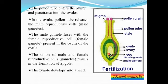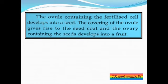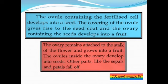The zygote develops into a seed and the ovary develops into a fruit. The ovule containing the fertilized cell develops into a seed, and the covering of the ovule becomes the seed coat. The ovary containing the seed develops into a fruit. The ovary remains attached to the stalk — just as the flower was attached to the stalk — and grows into a fruit, while the ovule inside develops into the seed.